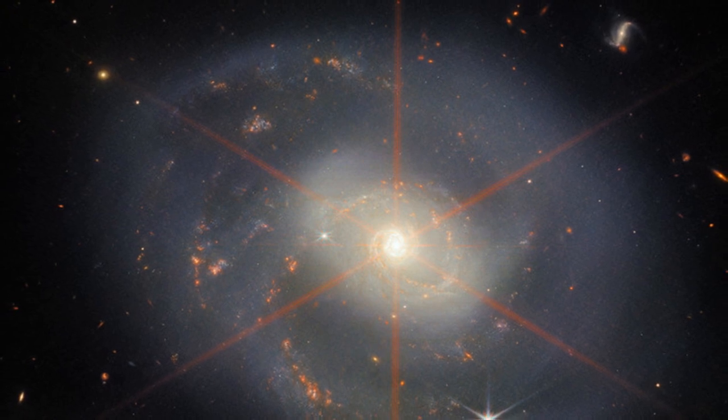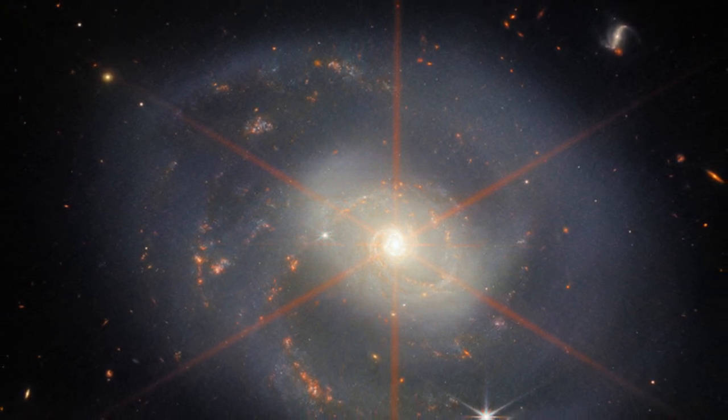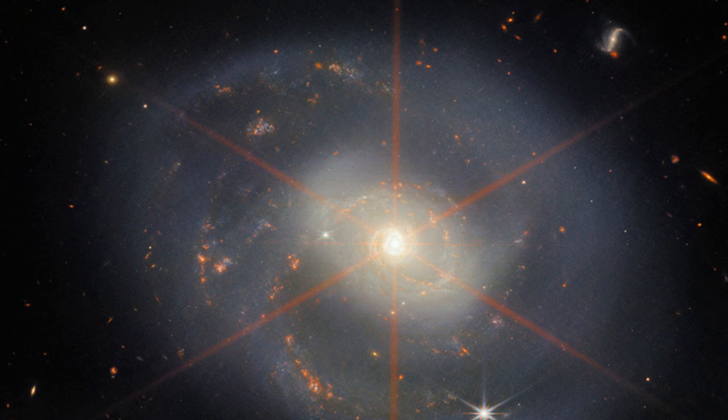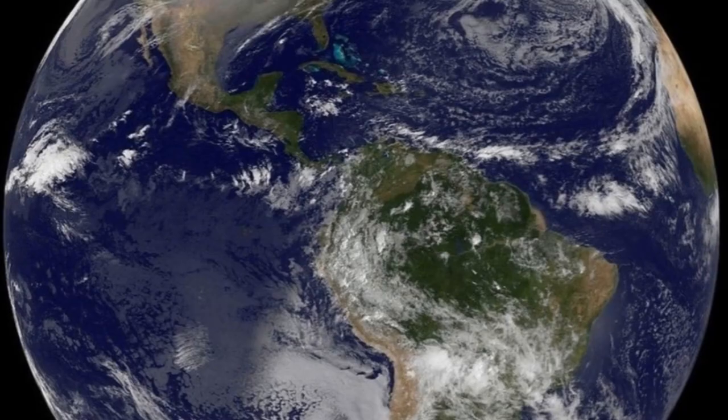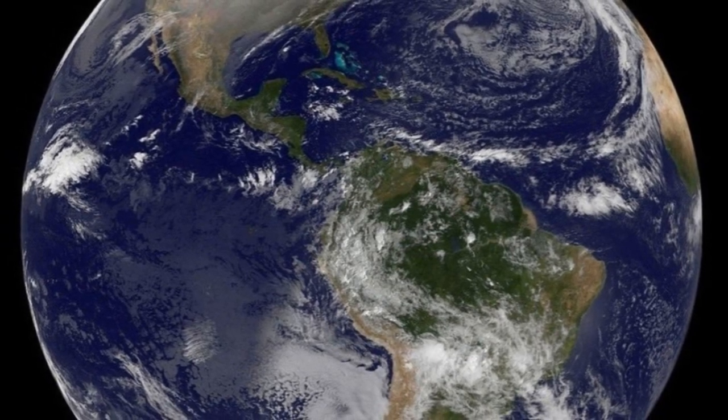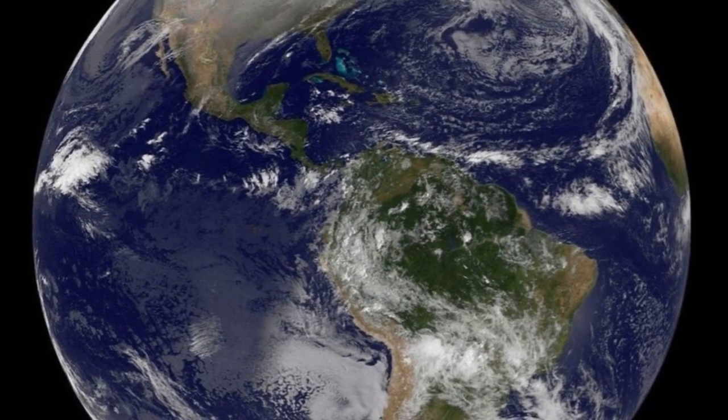And where there are stars, there might be planets. Some of these ancient images reveal disks of dust and gas surrounding young stars, the building blocks of planets. By studying these protoplanetary disks, we can learn about the birth of planets, perhaps even planets like our own.